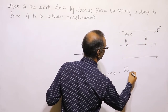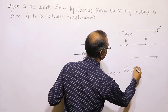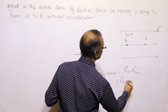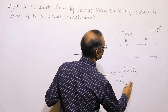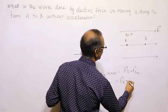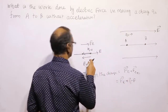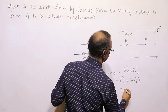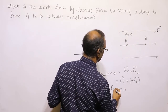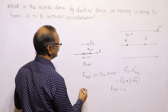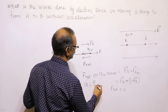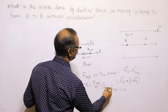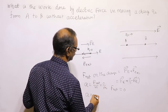F_net is the vectorial addition of F_electric plus F_external. Since F_external is equal to negative of F_E, this sum is equal to 0. It means F_net equals 0. If F_net is equal to 0, then acceleration equals force by mass, which is 0 by M — so acceleration is equal to 0.